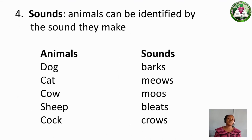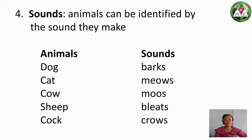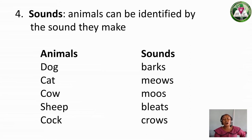Now let's quickly move to Sounds. Animals can be identified by the sound they make. Do you know the sound a dog makes? A Dog Barks. Another one is Cat — can you make the sound of a cat? Meow, meow. Cat Meows.